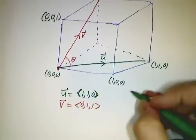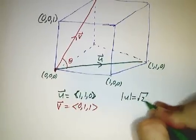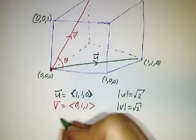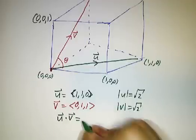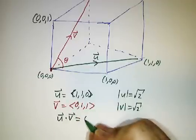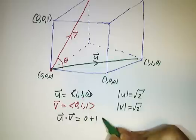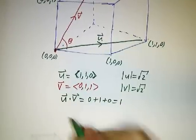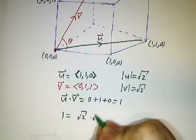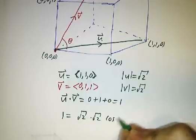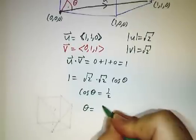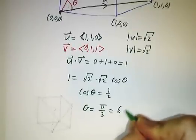And the length of u is the square root of 2. The length of v is the square root of 2. And u dot v is 1 times 0, plus 1 times 1, plus 0 times 1, is 1. So 1 is equal to the square root of 2 times the square root of 2, times the cosine of theta. So the cosine of theta is 1 half, which means that theta is π over 3, or 60 degrees.